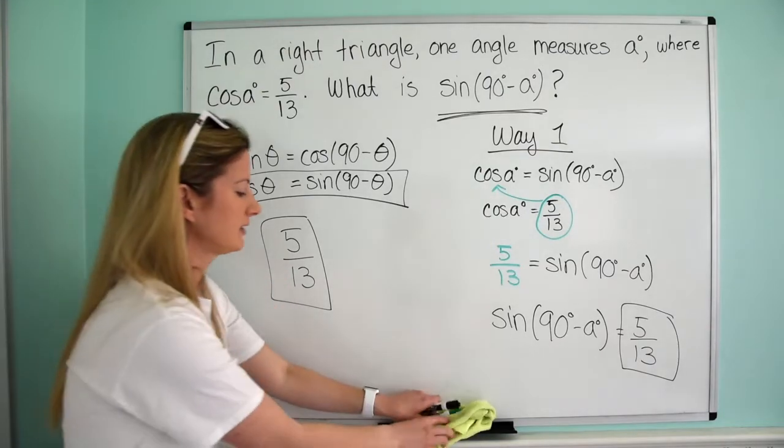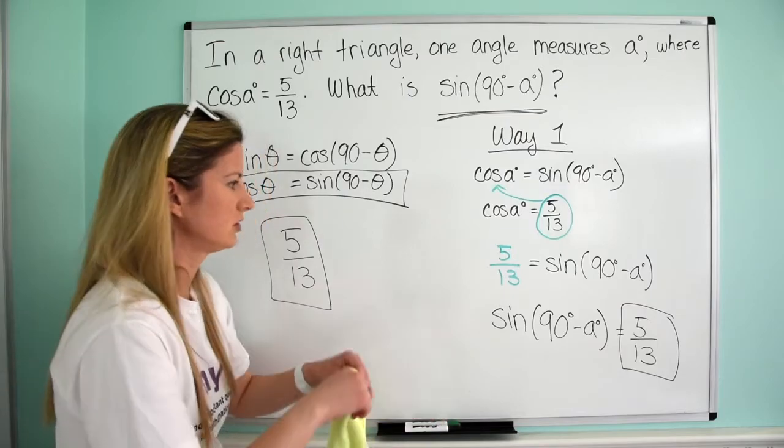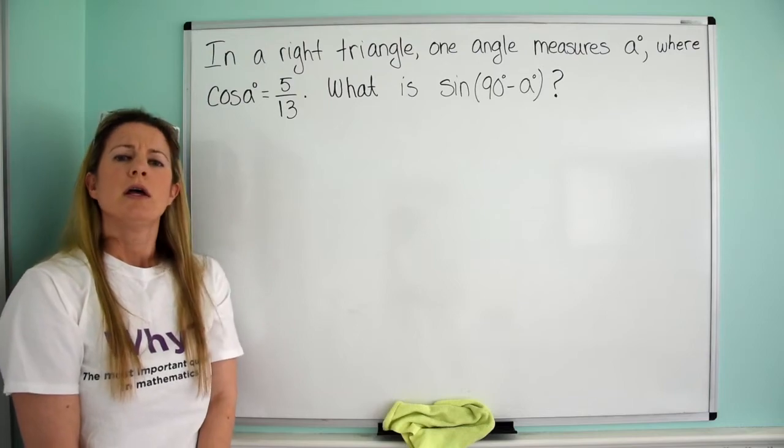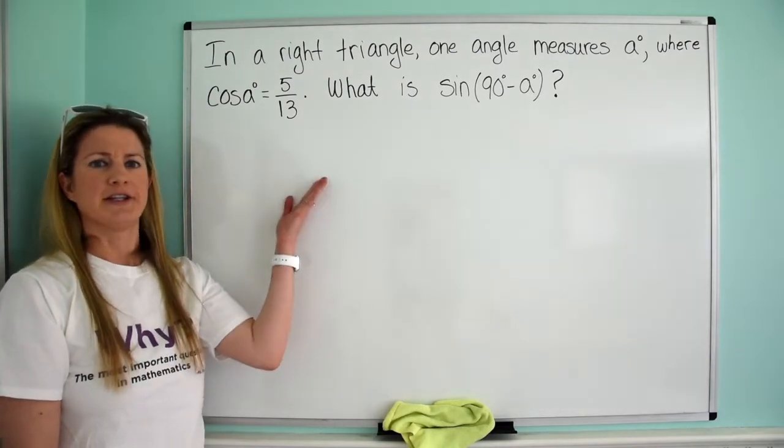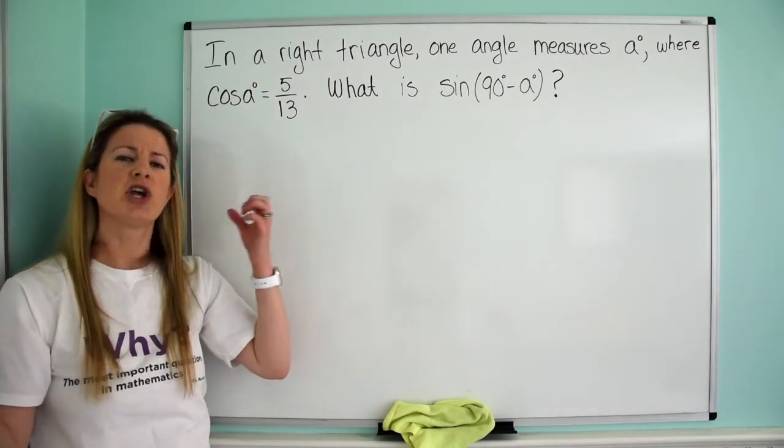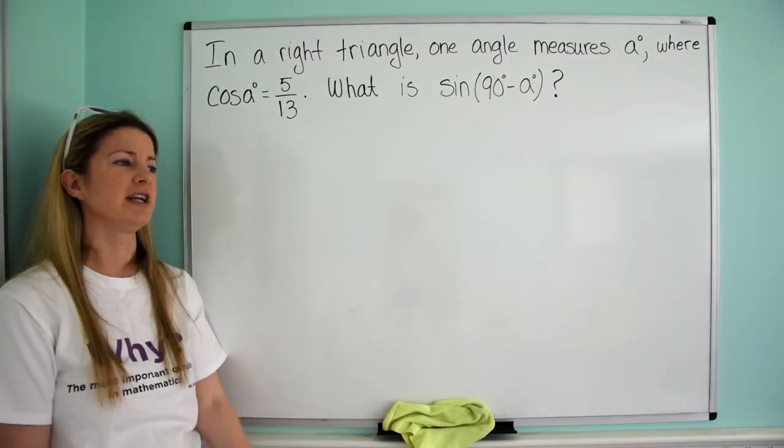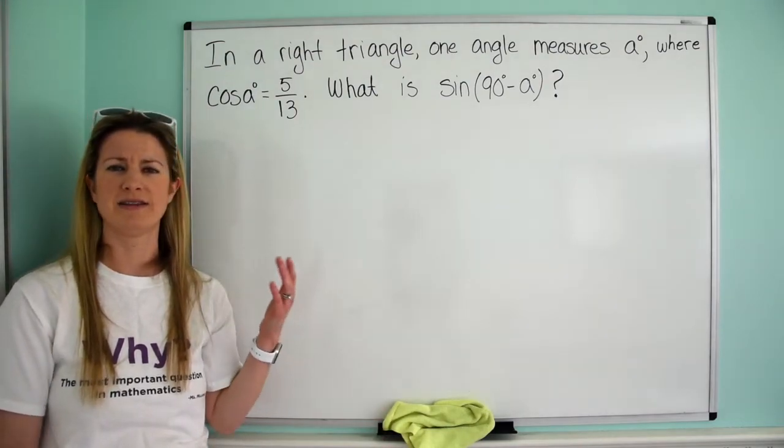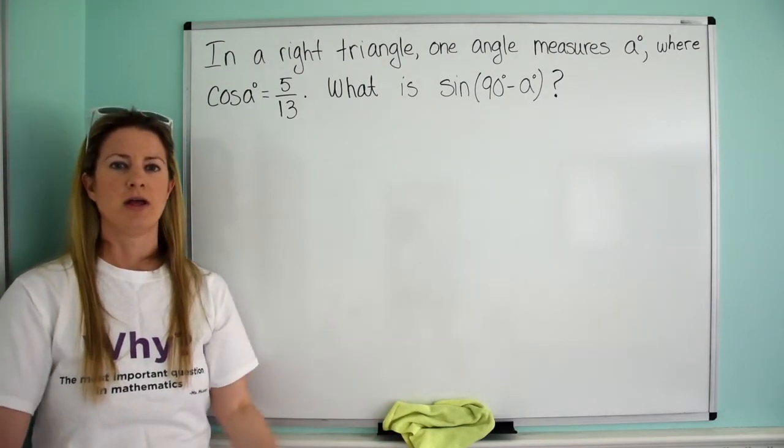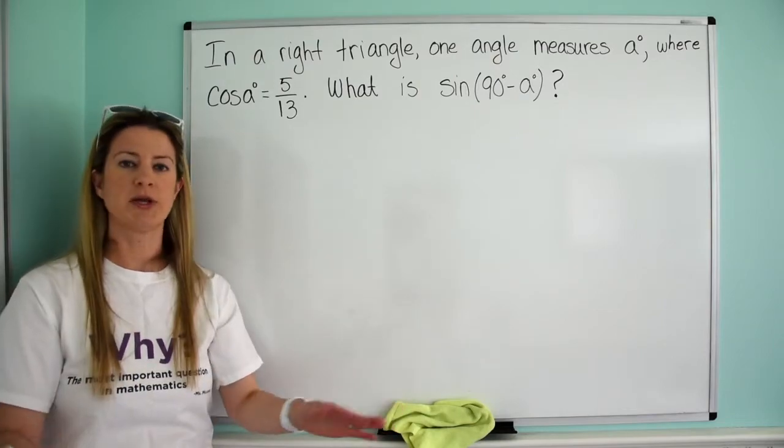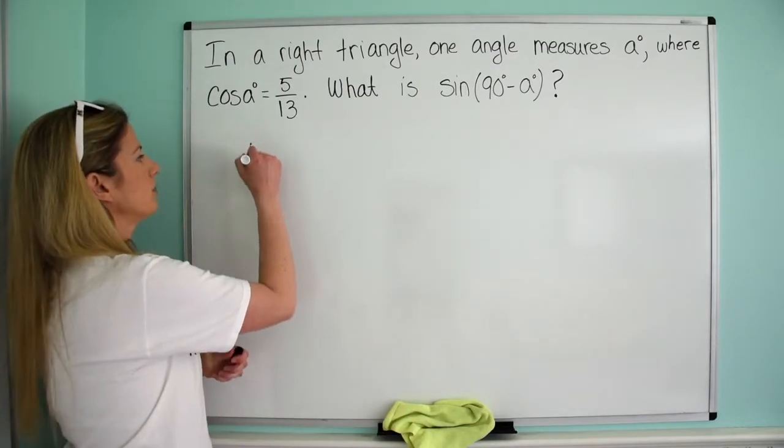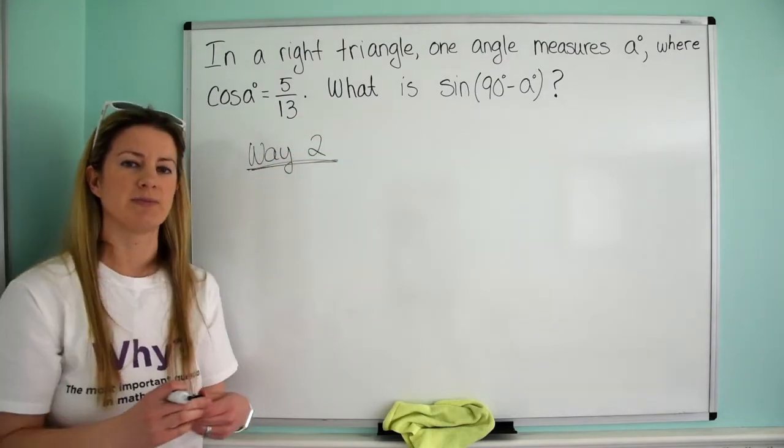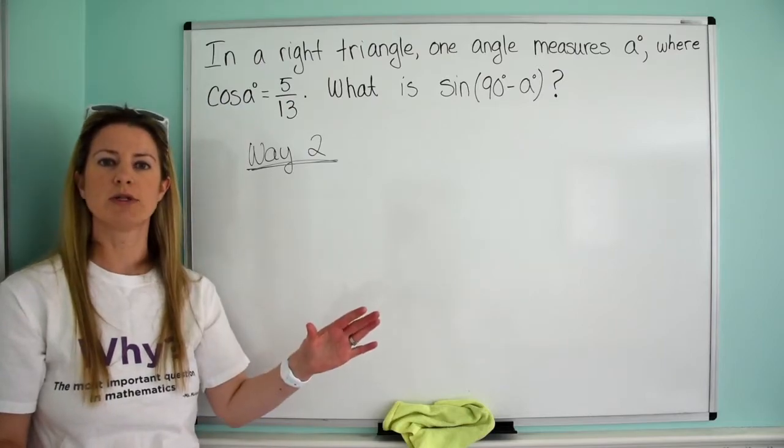All right. So let's think about way number two. Let's say you get to this problem and you're like, oh my gosh, I totally remember Ms. Wachowski was saying cofunction identities and I can't remember my identity. Is it cosine equals 90 plus theta 180? I don't know. If you're not 100% positive, I want you to do it way two.